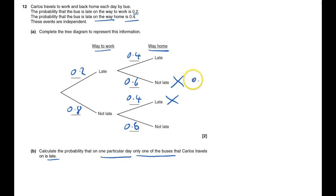So the top route here will be 0.2 times 0.6, and that is 2 times 6 is 12. It's one-two numbers after the decimal place, so this must have two numbers after the decimal place. It's 0.12, and similarly...